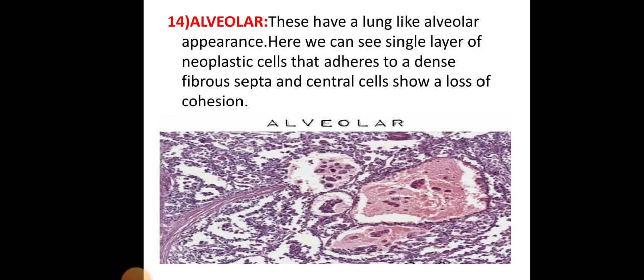The alveolar pattern is where cells have a lung-like alveolar appearance. We can see a single layer of neoplastic cells that adhere to dense fibrosepta, with central cells showing loss of cohesion.